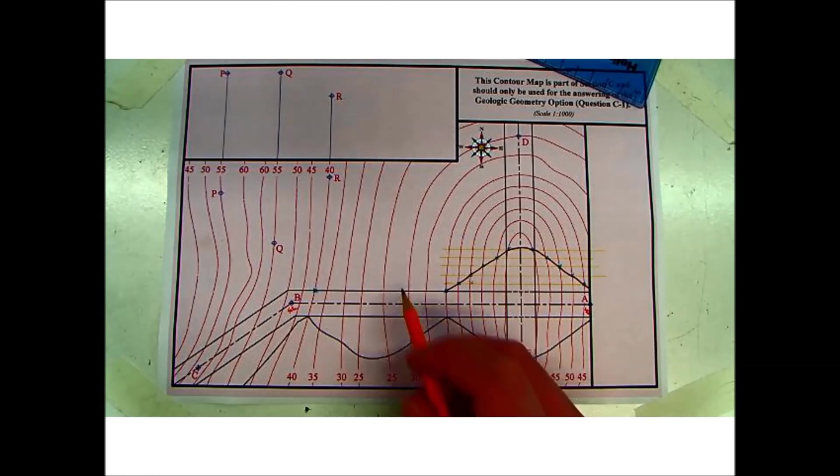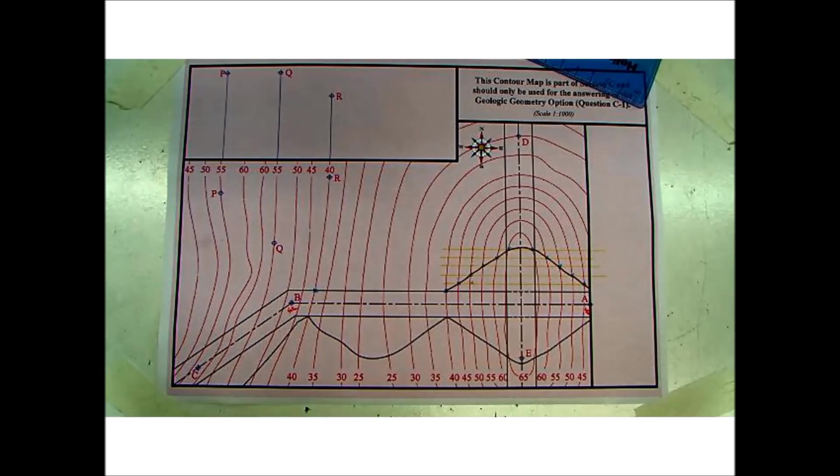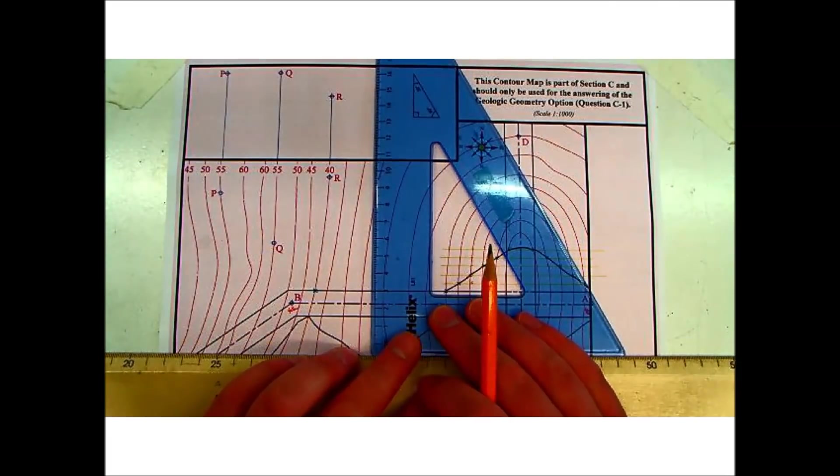So if it's 1 is to 1.5 that means every 5 meter drop will mean you have to draw a 7.5 millimeter line. So our parallel lines this time are going to be 7.5 millimeters. So they're going to be parallel to the road. So you can measure them up from the road.